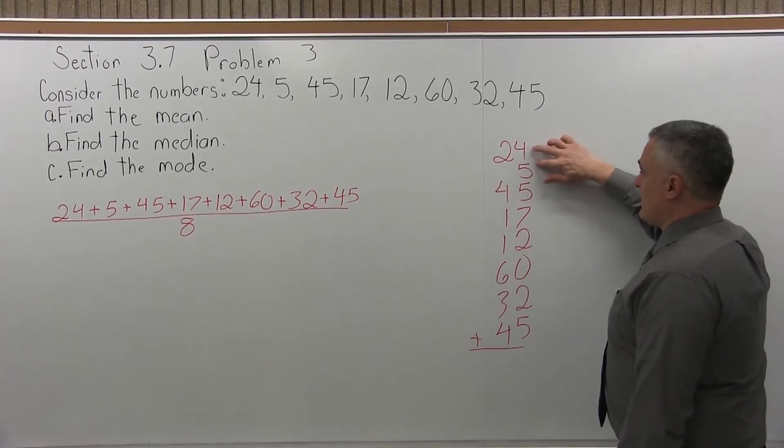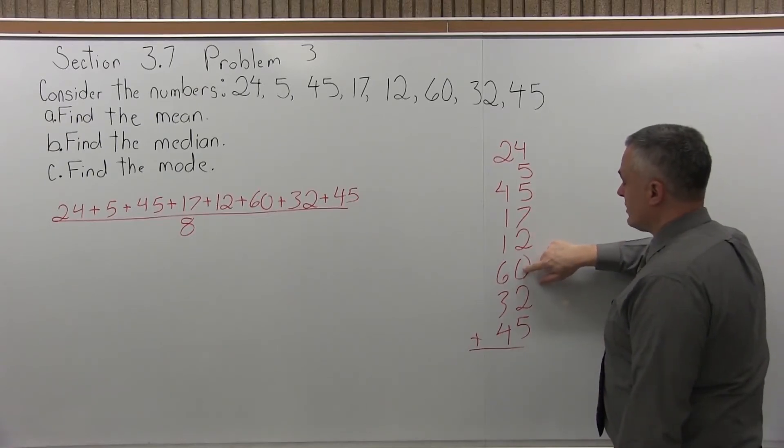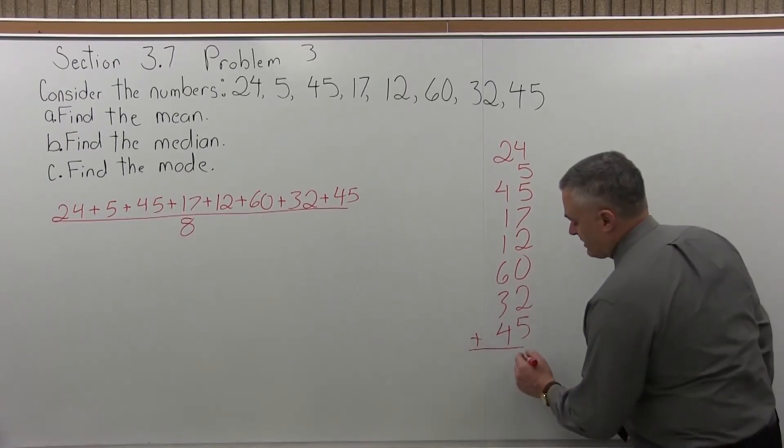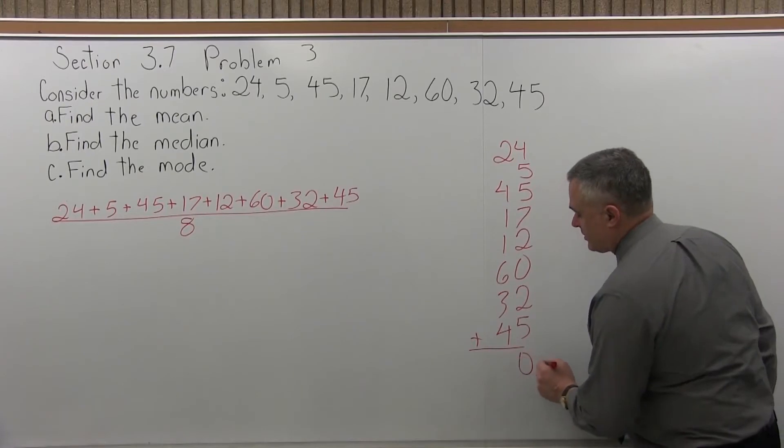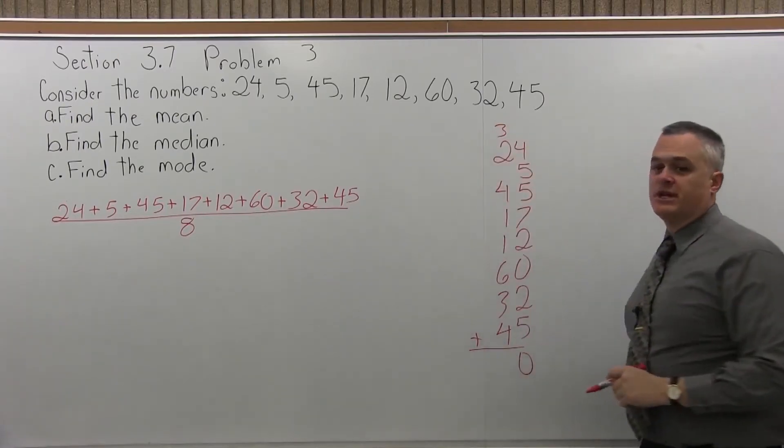So from the top, 4 plus 5 is 9, 9 and 5 is 14, 14 plus 7 is 21, 21 plus 2 is 23, 23 plus 0 is still 23, 23 plus 2 is 25, 25 plus 5 is 30. So for 30, we put the 0 from the 30 down at the bottom, carry the 3 from the 30 to the top of the next column.